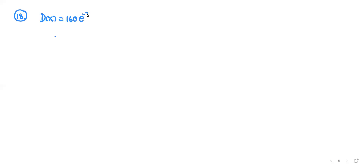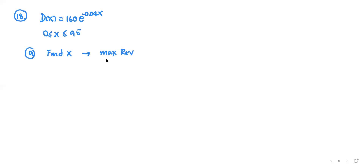The demand function is given as 160e to the negative 0.04x, where x is between 0 and 95. For part a, you're going to find the number of units — that means find x — that give you the maximum revenue. This is on a closed interval, so you're looking for the absolute maximum value on that closed interval. For part b, you're going to find the price per unit.